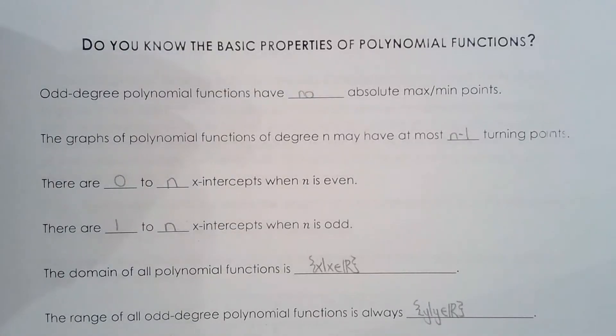In this video we'll take up the fill-in-the-blank sheet on properties of polynomial functions. So odd degree polynomials have no absolute max or min points which makes sense because their range is all real numbers.